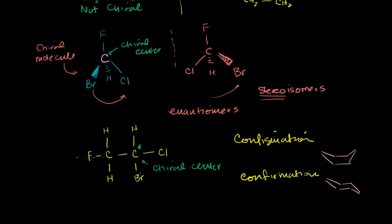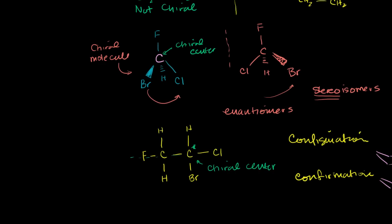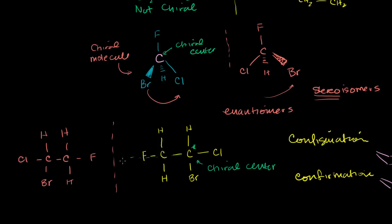We can draw the mirror image on the left side. It would have a fluorine, carbon, carbon, chlorine, two hydrogens, then a hydrogen and a bromine. No matter what you try — flipping or rotating — you will never be able to superimpose this on the original. So these are enantiomers and stereoisomers relative to each other. Either one you pick is a chiral molecule. In the next video, I'll do even more examples of this.